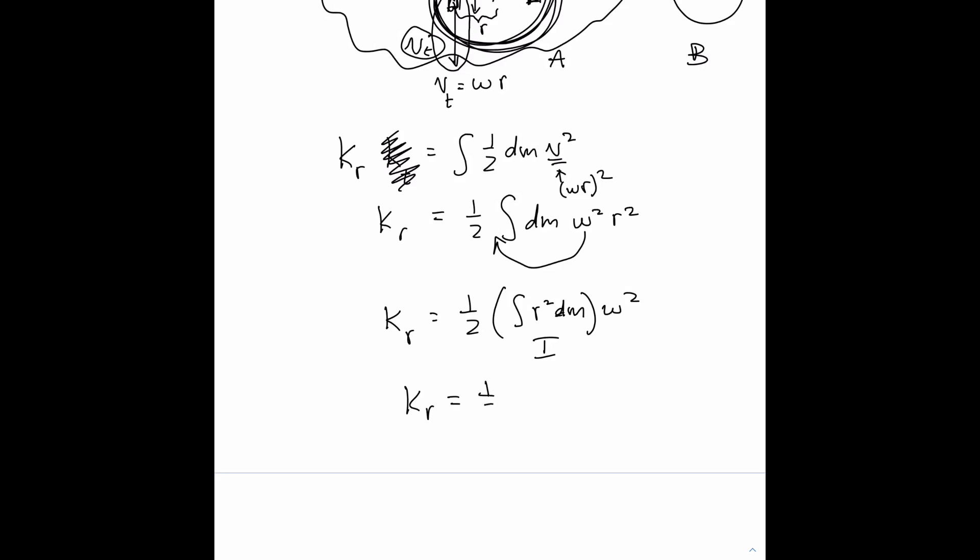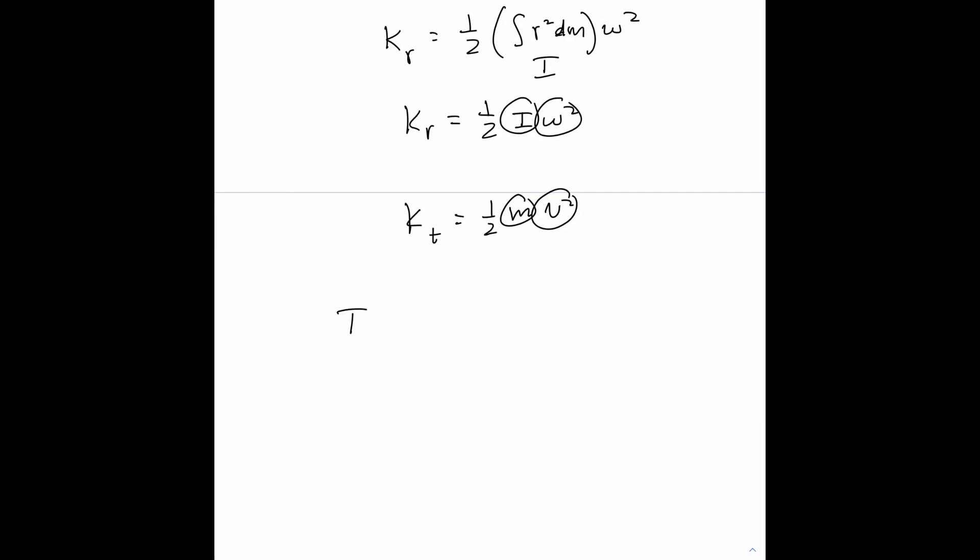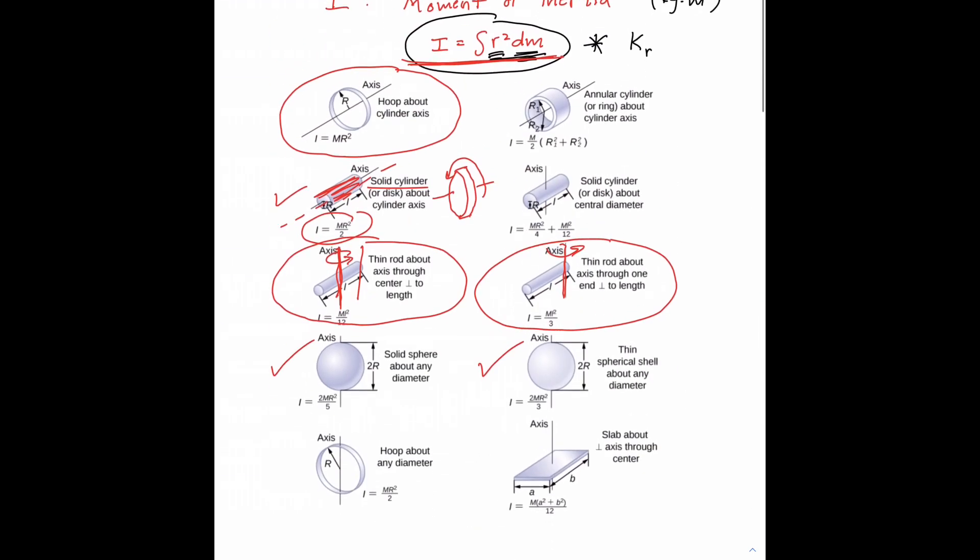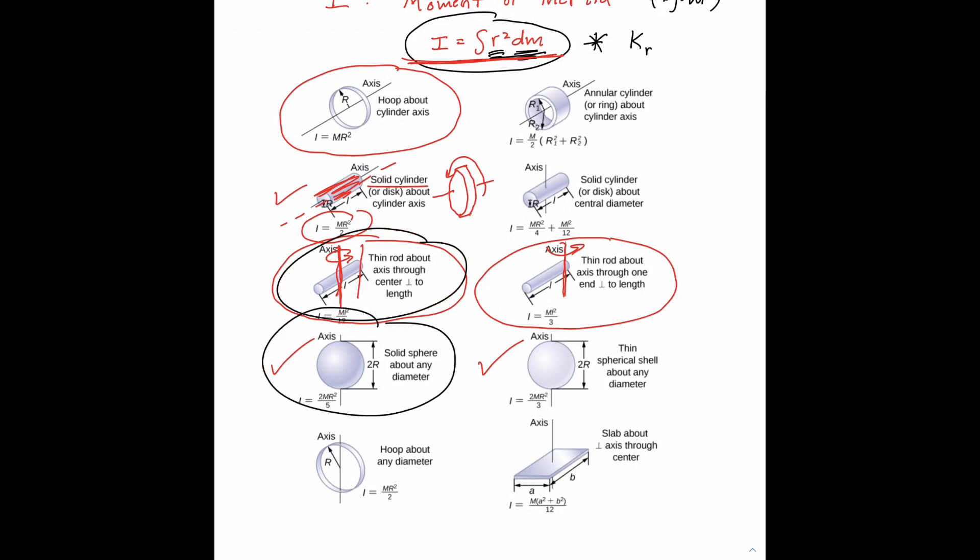So we have rotational kinetic energy is one half i omega squared, and we note that that formula looks analogous to one half m v squared, where rotational inertia is the analog to mass, and angular velocity is the analog to traditional velocity. So that's what we mean when we say rotational inertia is equal to the integral of r squared dm.